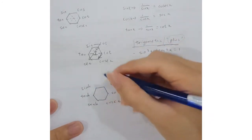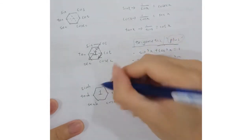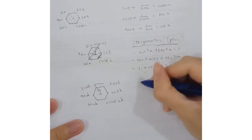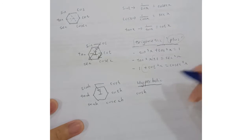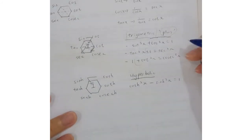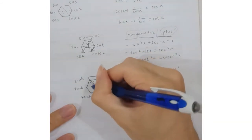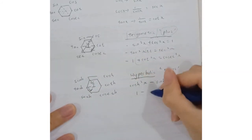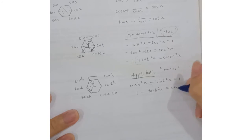The difference is that instead of going in the same direction as trigonometric functions, for hyperbolic functions we go in the opposite direction. The first formula: cosh squared x minus sinh squared x equals 1. For hyperbolic functions, we always use a minus sign. The second formula: 1 minus tanh squared x equals sech squared x.